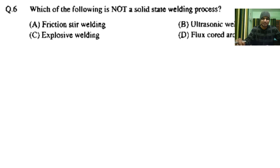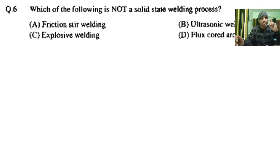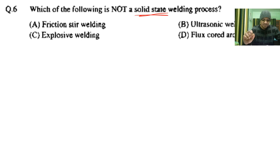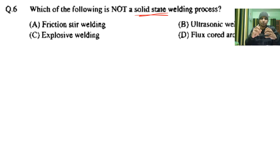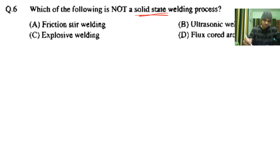Hello everyone, welcome to my channel. Let us solve the GATE 2010 questions of manufacturing processes. The first question is: which of the following is NOT a solid state welding process? Friction stir welding happens in the solid state — two materials are joined with the help of friction, one rotates at a very high RPM, creating heat, and welding takes place through diffusion. So this is a solid state process.